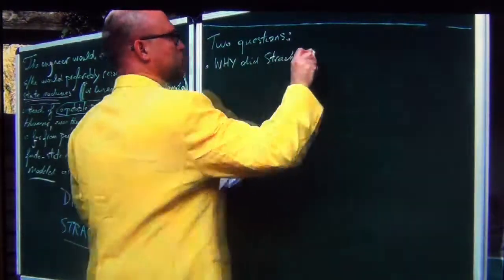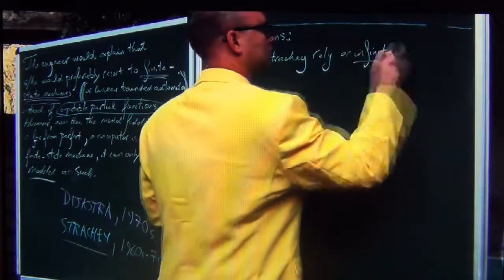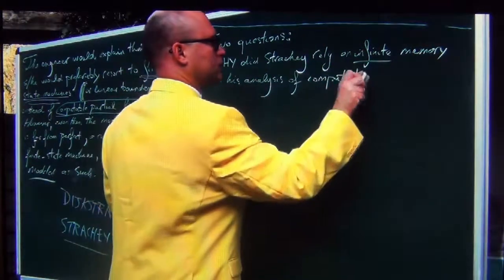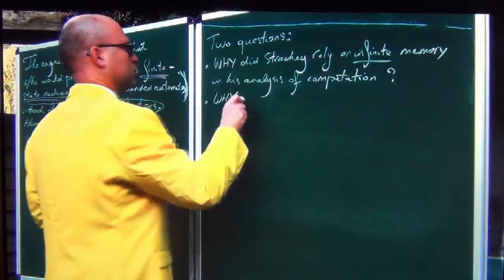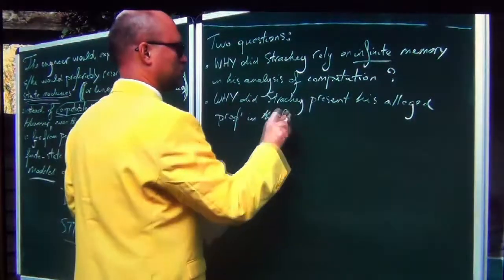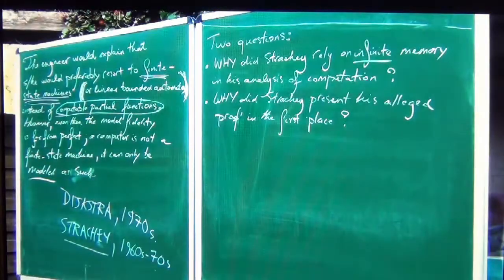Dijkstra in the 1970s, or Dave Parnas and others, advocated finite state machines or finite abstractions, and then you have somebody like Strachey and many others who advocated infinite abstractions. Two questions: why did Strachey rely on infinite abstraction and infinite memory in his analysis of computation? And why did Strachey present his alleged proof in the first place?